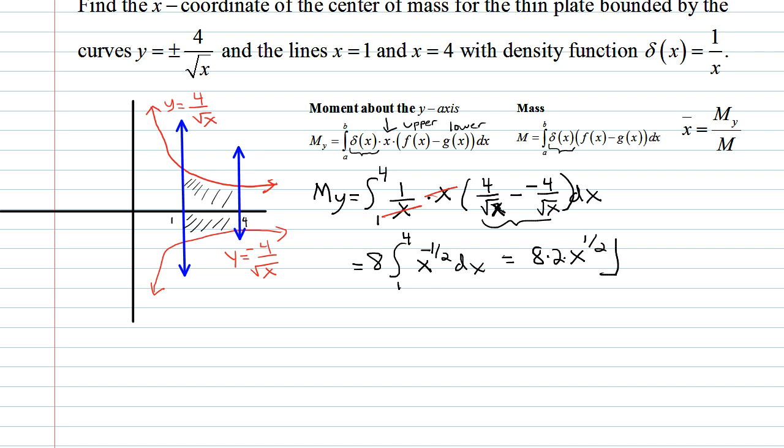And we evaluate from 1 to 4. So we're talking about basically 16 root x. So we'll have 16 root 4 minus root 1. And that's just 2 minus 1, so that's just 16 being the moment about the y-axis.